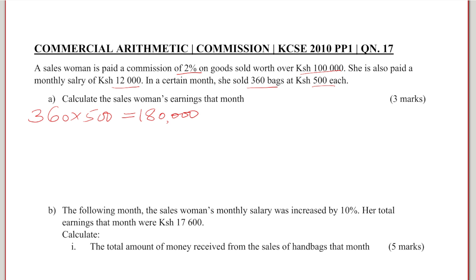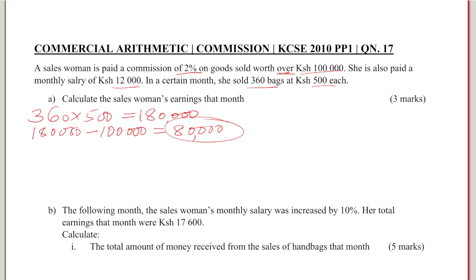From there, we need to get the commission on these sales. We are given that the saleswoman is paid a commission of 2% on goods sold over $100,000. When you look at the sales, we have $180,000. So the amount that is above $100,000 — because that is what she gets commission on — we simply subtract: $180,000 minus $100,000, which gives goods over $100,000 equal to $80,000.